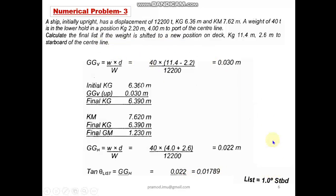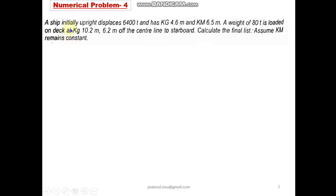A ship initially upright displaces 6,400 tons and has KG 4.6, KM 6.5. A weight of 80 tons is loaded on deck, KG 10.2 meters, 6.2 meters of the central line to starboard. Calculate the final list. Assume KM remains constant. So the difference between the previous question and this question is clearly: the previous question there is a shifting of mass which is already on board the vessel.